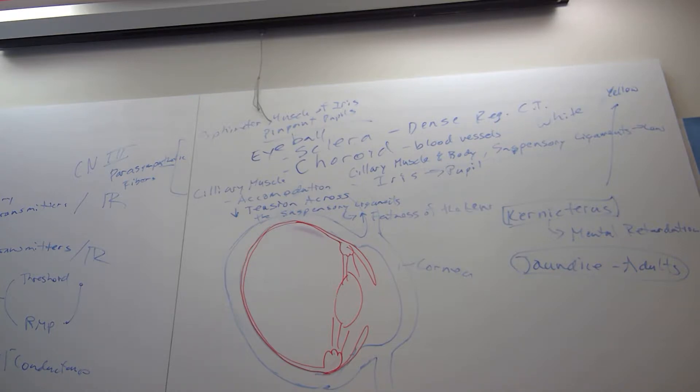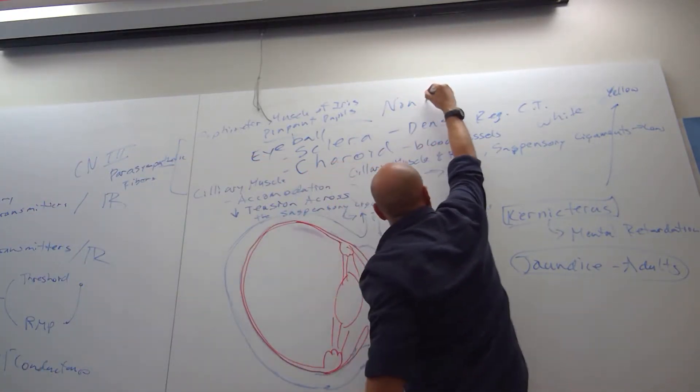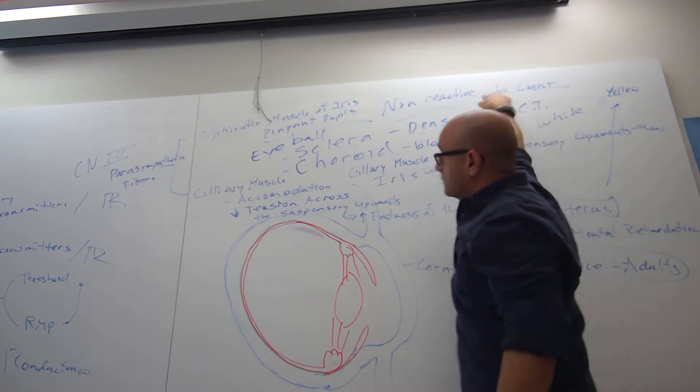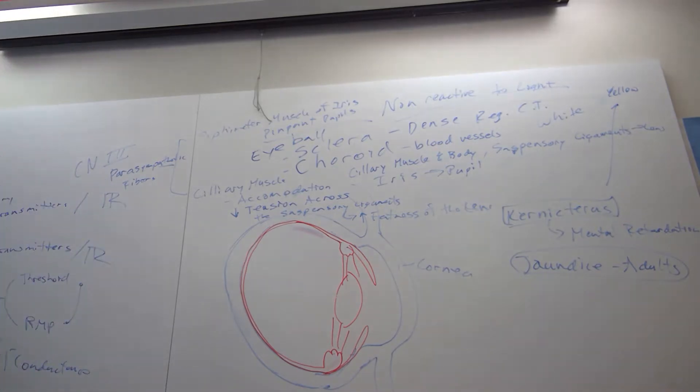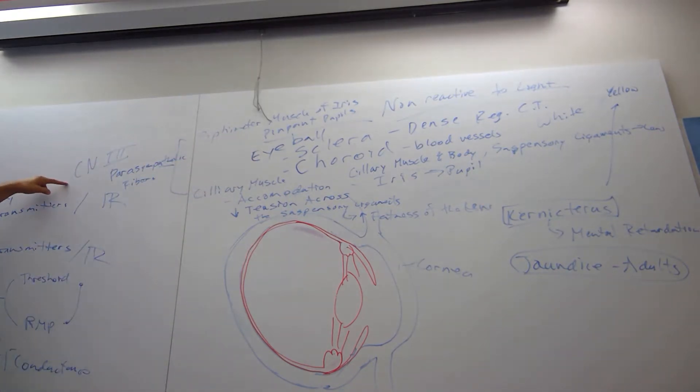If a patient comes in and they have pinpoint pupils, non-reactive to light, brainstem is being affected. Their brainstem is shutting down. Why do I say the brainstem? Why the brainstem? Well, because what is the pupil's connection? Through cranial nerve three, right? And cranial nerve three is coming out where? At the midbrain. At the level of the midbrain and the pons. That's brainstem.